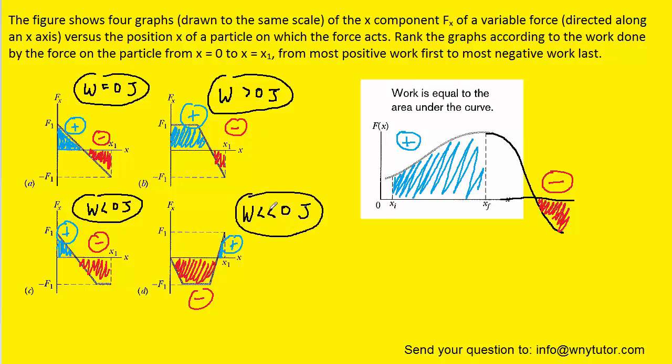And now we would be ready to rank the graphs from the most positive work to the most negative work. The most positive work would be graph B, followed by graph A, and then graph C moves into negative work.